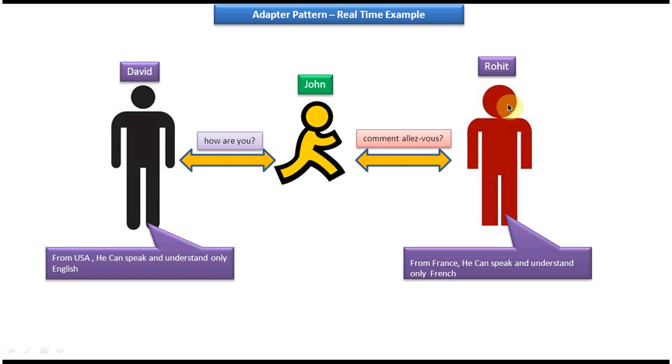So this Rohit can understand French. So he will tell 'I am fine' in French. Then what John will do is he will convert this 'I am fine' in French to English and he will tell to David. So in this way David can communicate to Rohit.